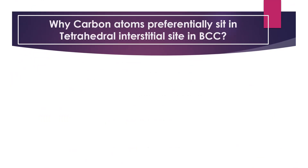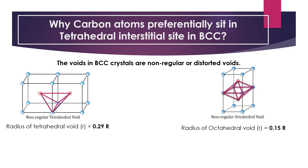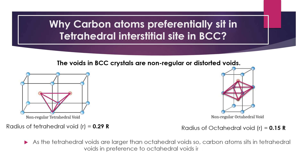You may ask why that is so. The voids in BCC crystals are non-regular or distorted voids. The radius of the tetrahedral void is 0.29 times the radius of the atom, which is greater than the octahedral void in BCC crystal, which is 0.15 times the radius of the atom. As the tetrahedral voids are larger than the octahedral voids, carbon atoms sit in tetrahedral voids in preference to octahedral voids in the BCC unit cell.